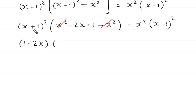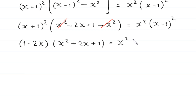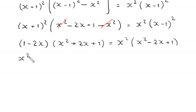We expand (x + 1)², which becomes x² + 2x + 1. On the right-hand side, we expand (x - 1)², which gives x² - 2x + 1. So x² times (x² - 2x + 1). Now we multiply (1 - 2x) by (x² + 2x + 1): 1 times x² = x², 1 times 2x = 2x, and 1 times 1 = 1.